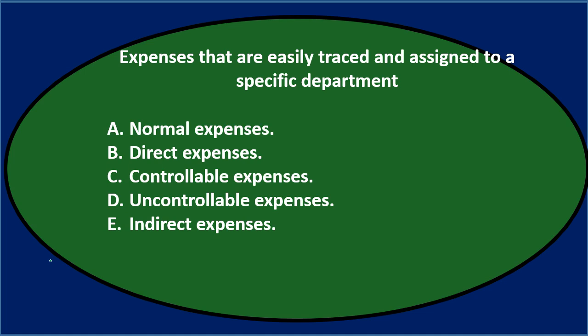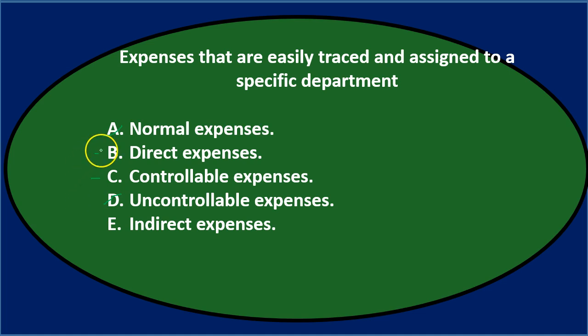Let's go through this using the process of elimination. A, normal expense — again, not a term we typically use here. B, direct expense — that sounds reasonable for expenses easily traced and assigned to a specific department. C, controllable expense — that should also sound familiar. D, uncontrollable expense — between controllable and uncontrollable, if it's traced directly there I would think it's more under the control of the department, so controllable seems more likely. E, indirect expense — that's the opposite of direct, so probably not E.